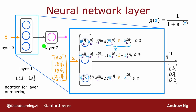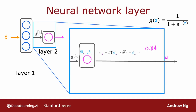So that's the computation of layer one of this neural network — its output is the activation vector a superscript square bracket one. This output a^[1] becomes the input to layer two. Now let's zoom into the computation of layer two, which is also the output layer. The input to layer two is the output of layer one.